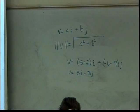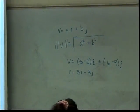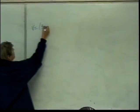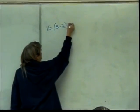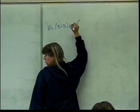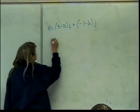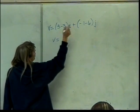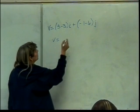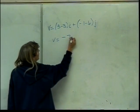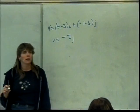Alright, now you get to do this one yourself. 3 minus 3i plus negative 1 minus 6j. That will give us 0i, so I don't have to write it. Plus a negative 7j, so just negative 7j as my answer.